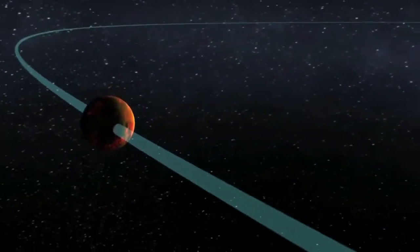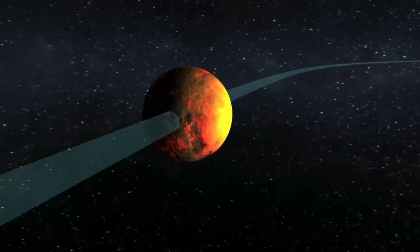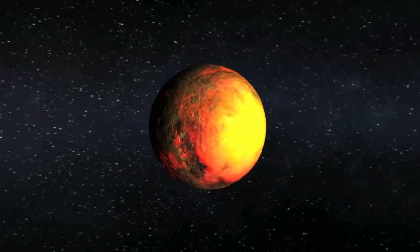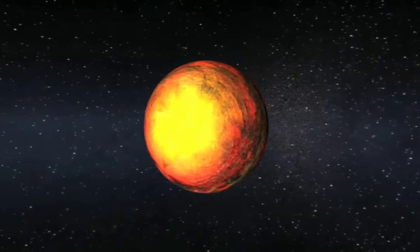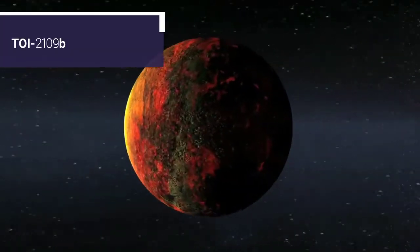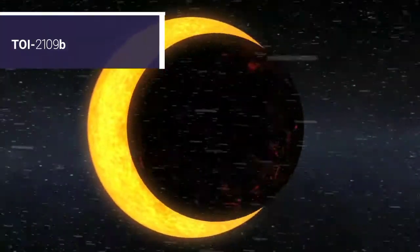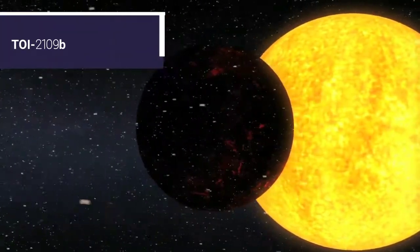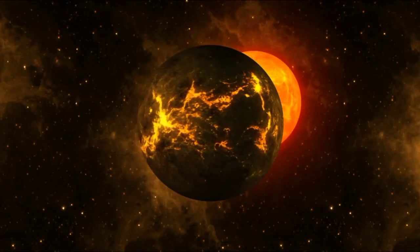About 855 light-years away from Earth, astronomers have discovered a new planet which orbits its star in just 16 hours, which means a single year on this planet is only about 16 hours long. The planet's name is TOI-2109b, and it's what astronomers call an ultra-hot Jupiter.